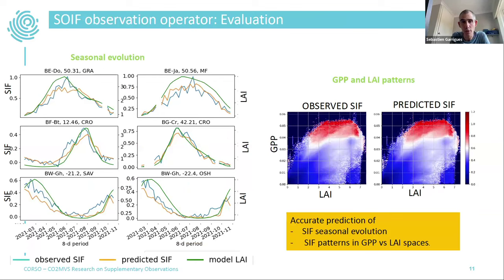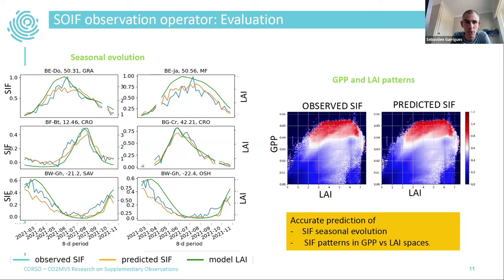This is a summary of the SIF results. On the left, a seasonal plot at site scale shows the predicted SIF in yellow and the observed SIF in blue — there is a good seasonal match between prediction and observation, and also a very good match with the model LAI shown on the right axis.